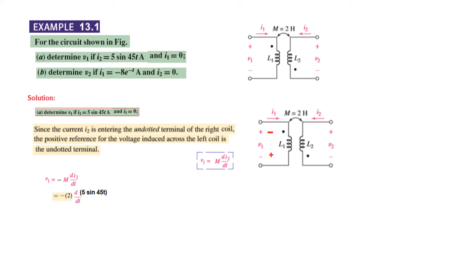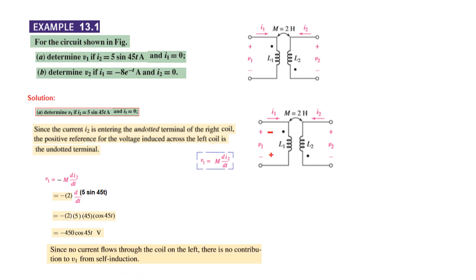So V1 = −M·dI2/dt. Plugging in the values: M is 2 H and I2 is 5·sin(45t). Taking the derivative, we get −2 × 5 × 45·cos(45t), which equals −450·cos(45t) volts. A point to note: since no current is flowing through the coil on the left, there will be no contribution to V1 from self-induction — since I1 is 0, there is no self-induced voltage, only the mutually induced voltage.